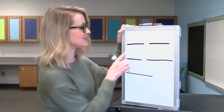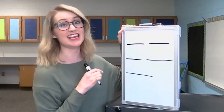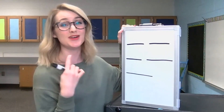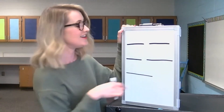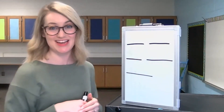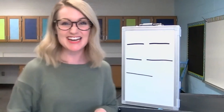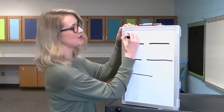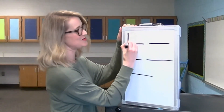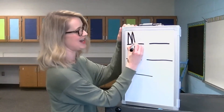Now we're ready to write. The first word in our sentence is going to need a capital letter because we always start our sentence with a capital. The first word is the word Mary — the character's name. Let's stretch it out: M-air-ee. Mary. There are three sounds in the word Mary. What sound do you hear at the beginning of that word? That's right, an M. Let's do a capital M: start at the top, go down, back up, slant down, slant up, slant down.